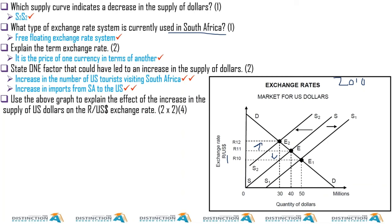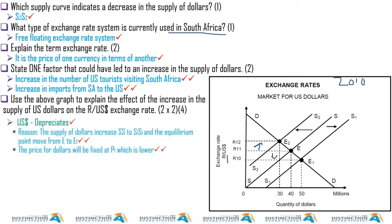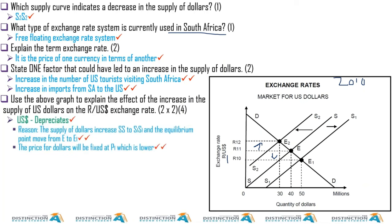Use the above graph to explain the effect of the increase in the supply of the US dollar. The effect will be that the US dollar would depreciate. As I said, if supply increases, the rand appreciates — and if the rand is appreciating, it means the USD is depreciating. So the supply of dollars increases from S to S1.